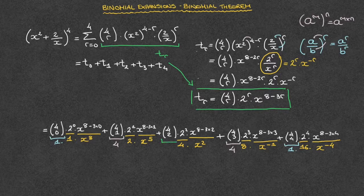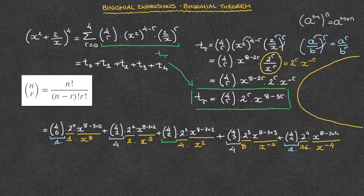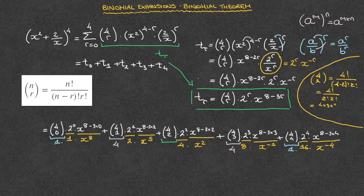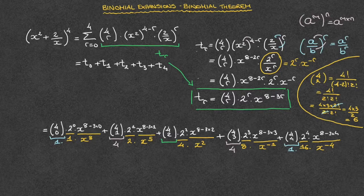Finally, we need to take care of this middle binomial coefficient, the 4,2. For that, we can use the binomial coefficient formula. The binomial coefficient 4,2 equals factorial 4 over factorial (4 minus 2) times factorial 2. That's equal to factorial 4 over factorial 2 times factorial 2. That's equal to 4 times 3 times factorial 2 over factorial 2 times factorial 2. The factorial 2 at the top and bottom cancel out, leaving us with 4 times 3 over factorial 2, which is just equal to 2. Finally, this is equal to 6. So the middle coefficient 4,2 is equal to 6.